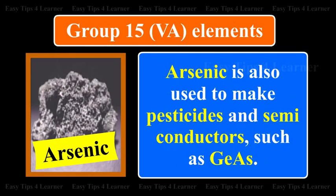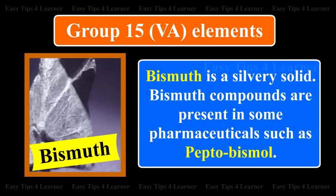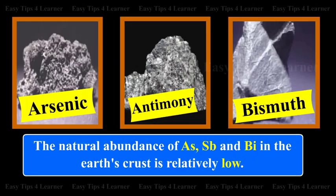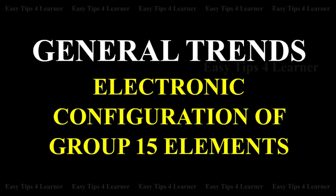Arsenic is used to make pesticides and semiconductors such as GaAs. Bismuth is a silvery solid; bismuth compounds are present in some pharmaceuticals such as Pepto-Bismol. The natural abundance of As, Sb, and Bi in the Earth's crust is relatively low.